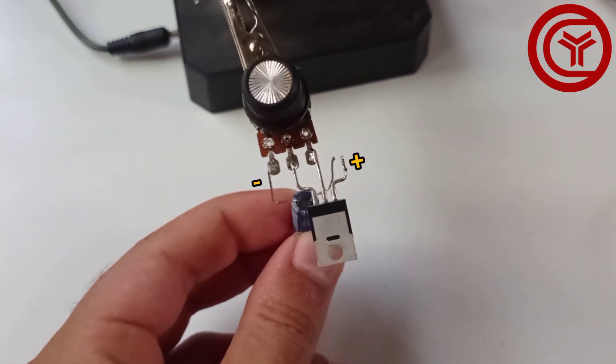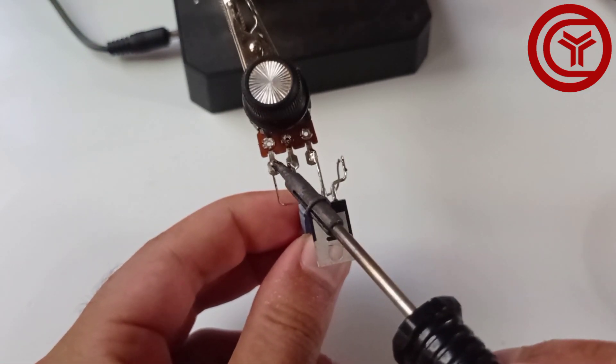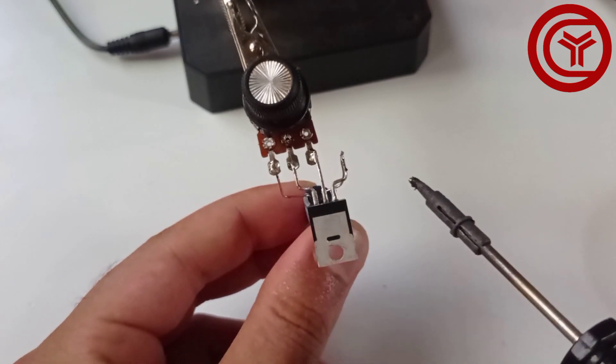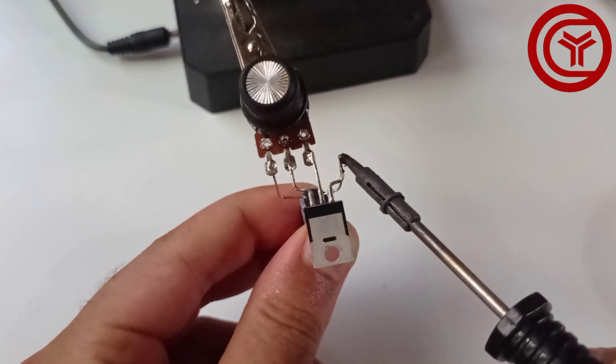Solder capacitor negative on potentiometer pin 1. And solder capacitor positive on source pin of MOSFET.